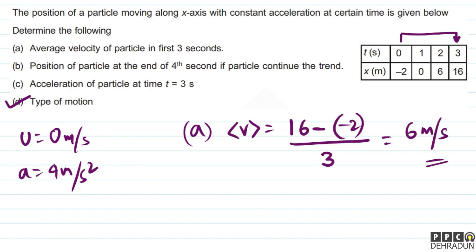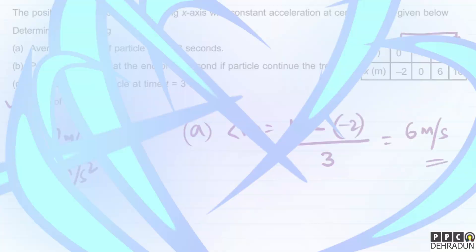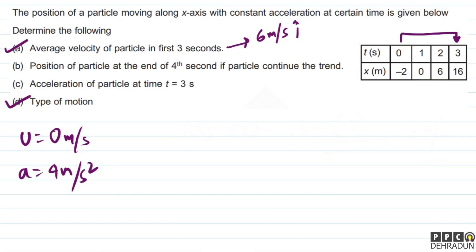We also understand that the direction of average velocity is along the direction of displacement. Since displacement is positive, average velocity direction is also positive. So the final answer for Part A is: average velocity = 6 m/s along the positive x-axis (or î direction).